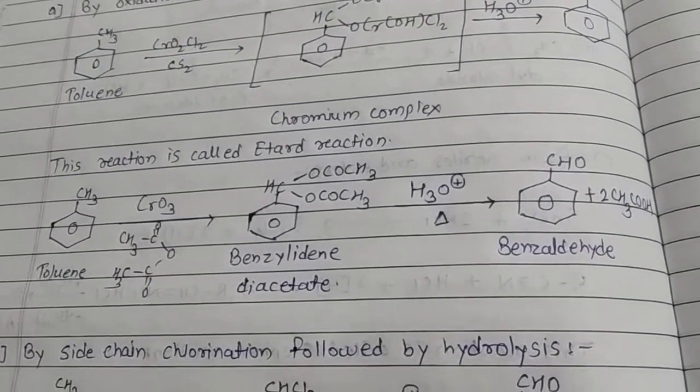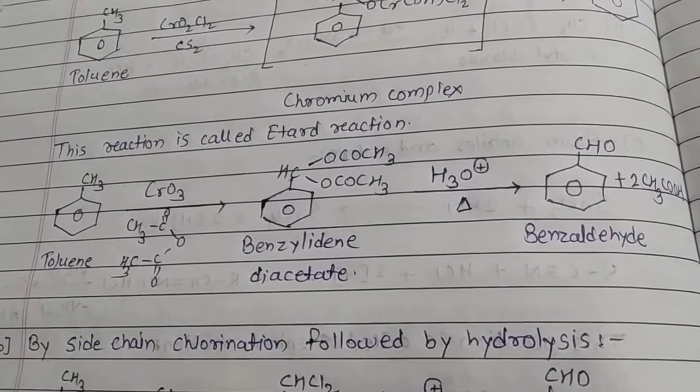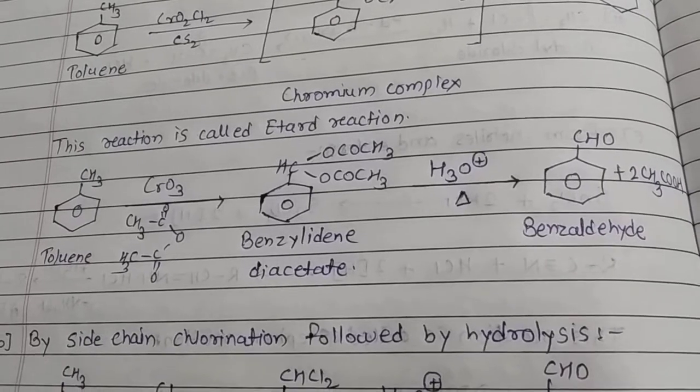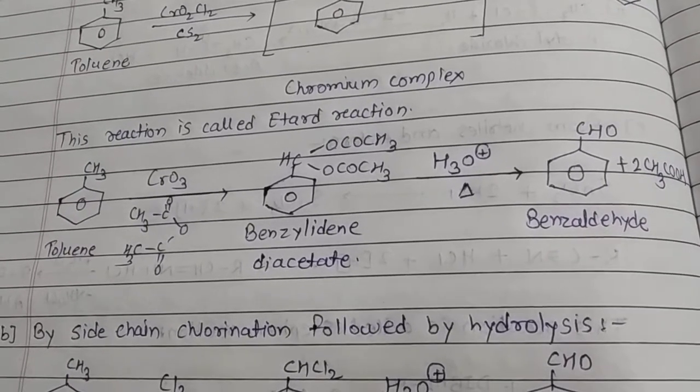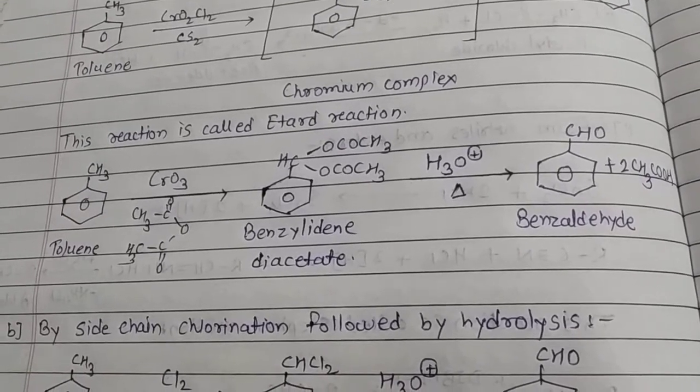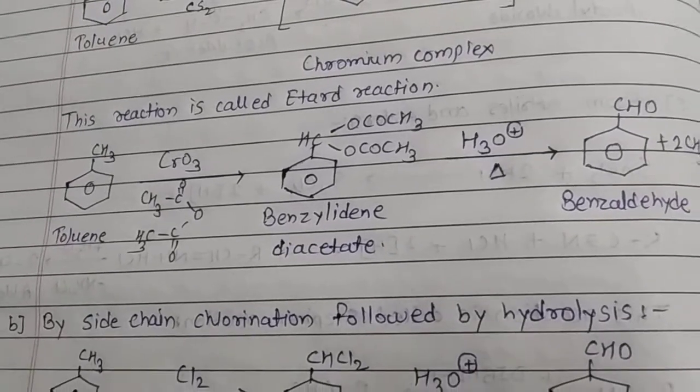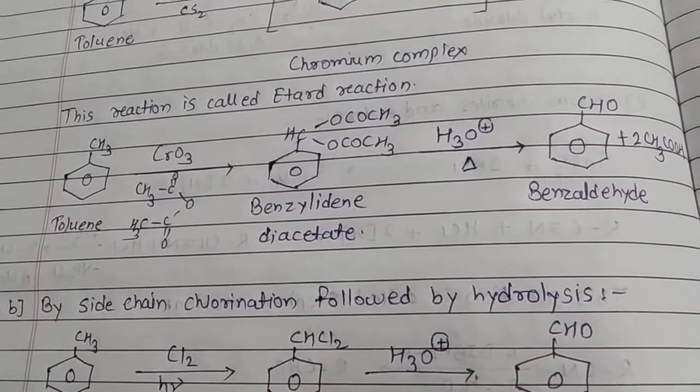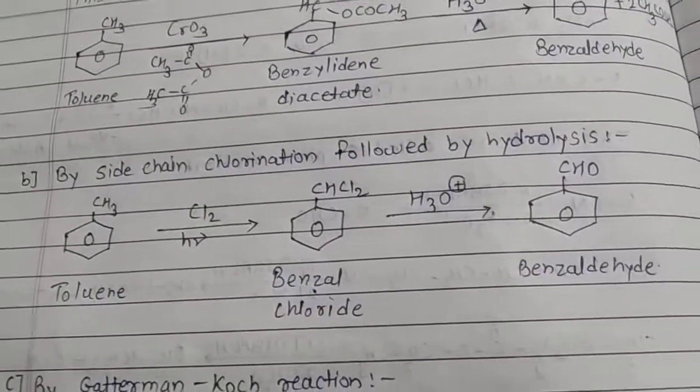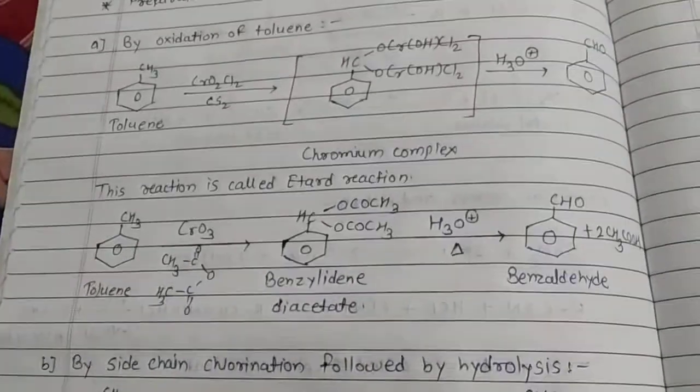Another such reaction: toluene plus CrO3, acetic anhydride is taken as solvent. We get a complex, benzylidene diacetate, where CH is attached to OCOCH3 two times. Again that is treated with hydronium ion to get benzaldehyde. Again CH3 is converted into CHO, and acetic acid is the byproduct. This was the first preparation of benzaldehyde by oxidation of toluene.